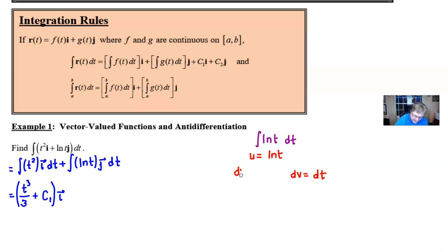The derivative of that natural log of t, of course, is 1/t with respect to t. And for the v we integrate dt and we of course are going to get t.